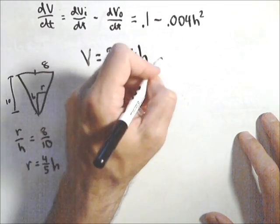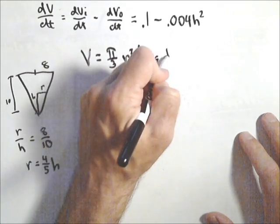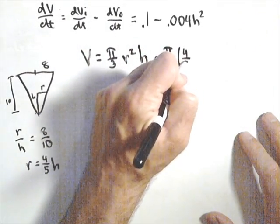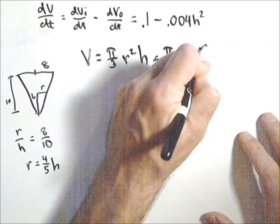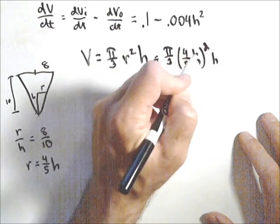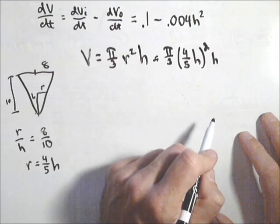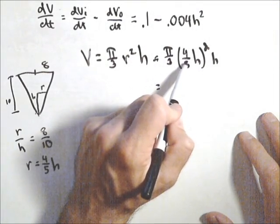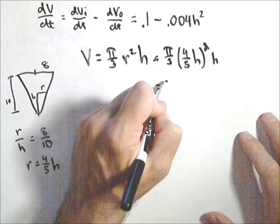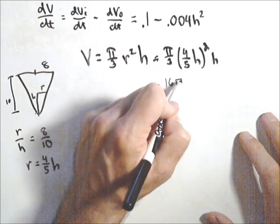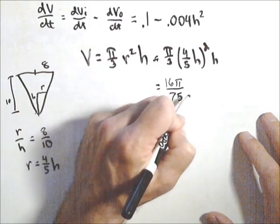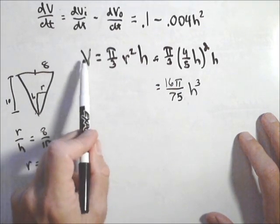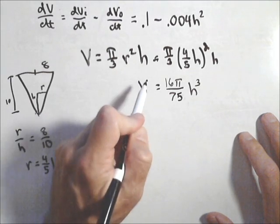Because I'm going to plug that in for this r here. So I've got π/3, 4/5h squared. That's something we look for. We always want to get our formula in terms of one variable. So if I simplify this, I've got 16 over 25 times the 3 on the bottom, so I have 16π/75 h³.